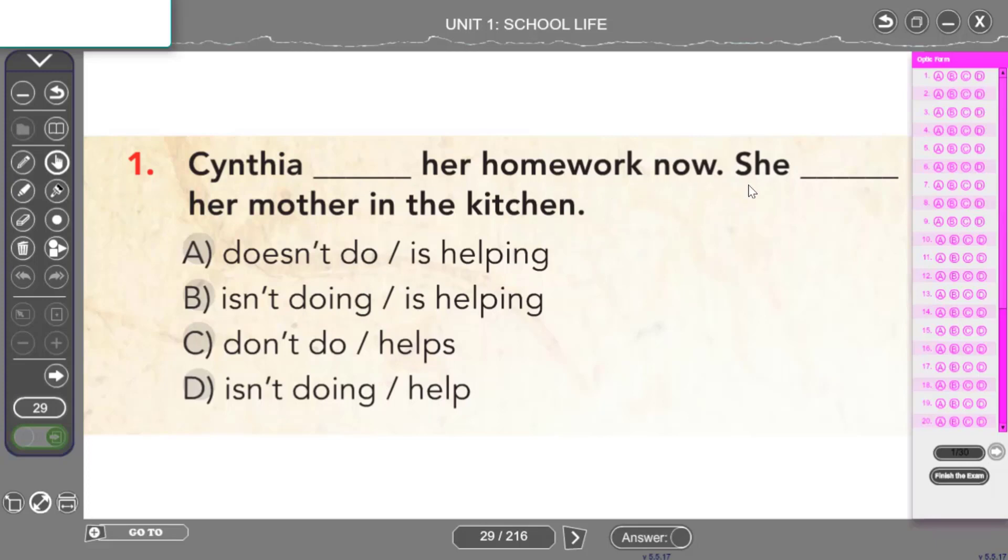Cynthia, her homework now, she, her mother in the kitchen. Bu soruda gördüğümüz gibi now zaman zarfını görüyoruz. Now zaman zarfı bize hangi zamanı kullanacağımıza dair ipucu veriyor. Now zaman zarfını hangi tense'imizle kullanıyorduk? Present continuous tense'iyle yani şimdiki zamanla kullanıyorduk. O zaman boşluklarda nasıl yapılar arayacağız? Cynthia, she olduğu için is yardımcı fiilini kullanmamız gerekiyor ve şimdiki zamanda fiilimize ne getiriyorduk? -ing takısını getiriyorduk. Bu ikisini sağlayan bir şık bulmamız gerekiyor.